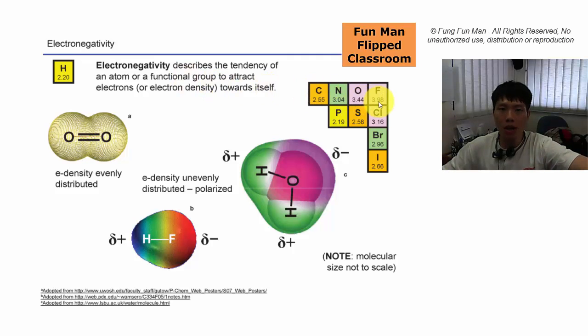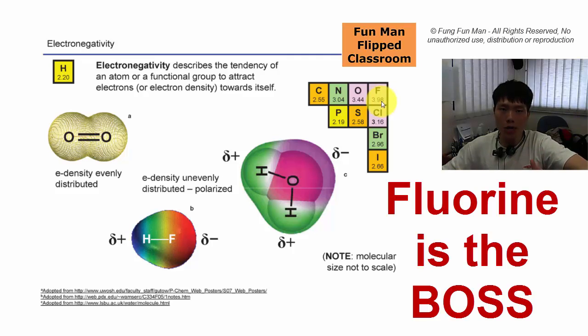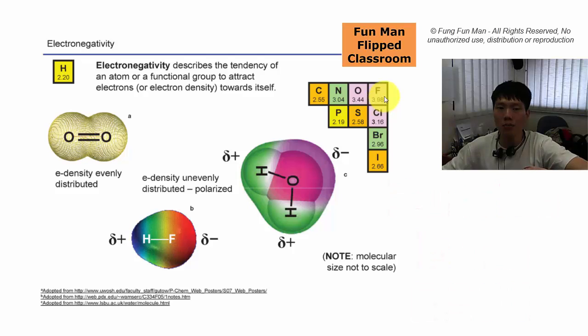These are some of the numbers that you should know. You don't have to know the exact value, but you should know the relative values—which one is higher, which one is lower. We know for sure that fluorine is the boss in the whole periodic table. Fluorine is the most reactive non-metal; it likes to grab any electrons around.